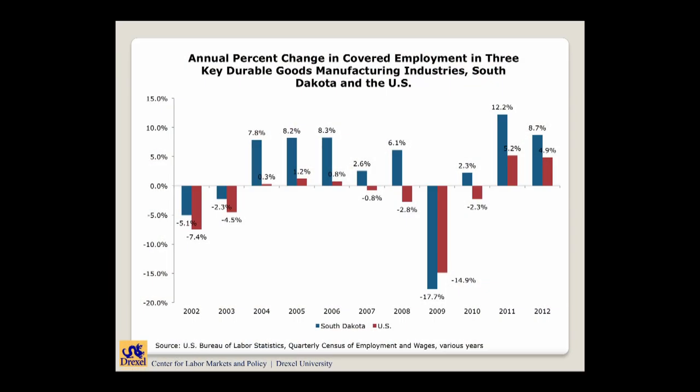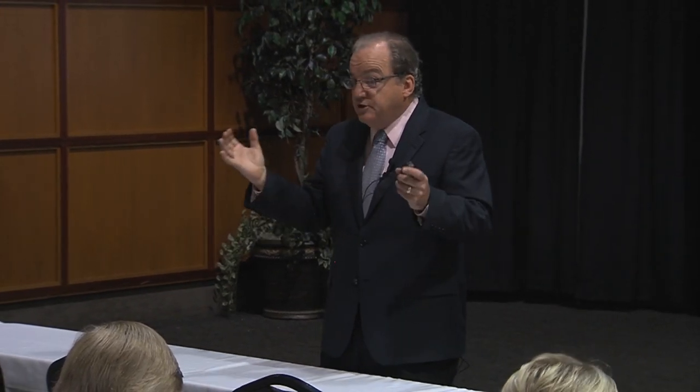Looking at durable goods manufacturing over a longer period, you can see the cyclical vulnerability. The red line is the U.S. and the blue line is South Dakota. In the recovery between 2004 and 2007, South Dakota did much better — able to add jobs in ways the country didn't. South Dakota clearly has a wage and skill advantage with respect to the manufacturing sector. In the longer pull, as a share of overall employment it's probably going to get smaller, while the service sector — particularly health and professional technical services — will probably be the major source of growth.